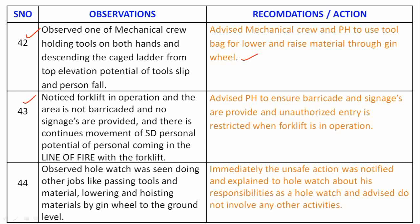Observation 43: Noticed a forklift in operation where the area was not barricaded, no signages were provided, and there was continuous movement of shutdown personnel, with the potential for personnel to come in the line of fire with the forklift. Recommendation: Advise the permit holder to ensure barricades and signages are provided and unauthorized entry is restricted when forklift is in operation.